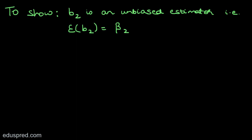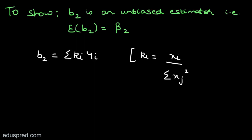Let's get started with the proof of unbiasedness. To start, let's write the formula to calculate B2. If you recall, while discussing the proof of B2 as a linear estimator, we showed that B2 equals summation Ki multiplied by capital Yi, where Ki equals small xi divided by summation small xj squared. We can start with this same formula. Note that we have to work with the population model that is linear in the parameters, and our true population model is Yi = beta1 + beta2·Xi + ui.